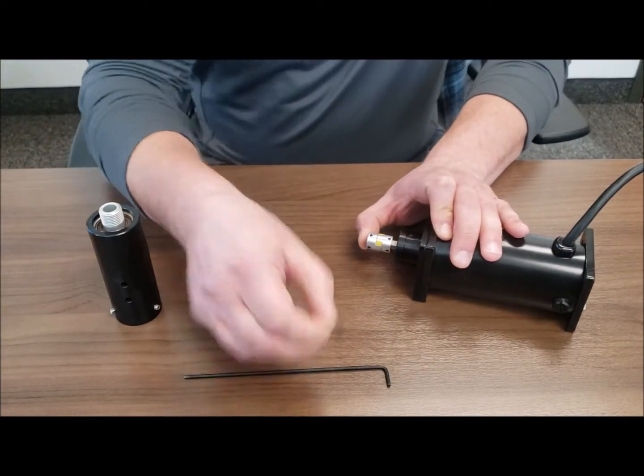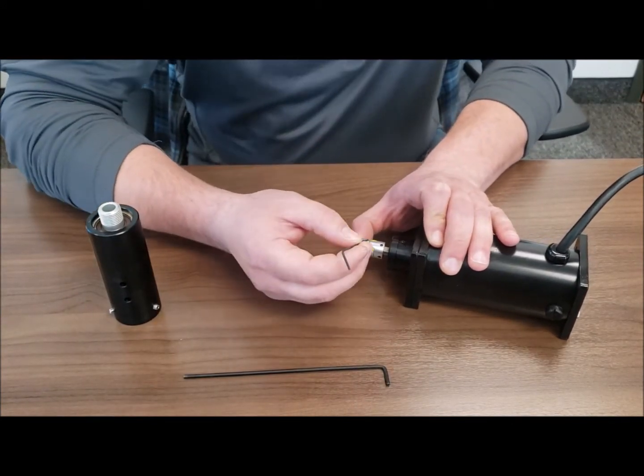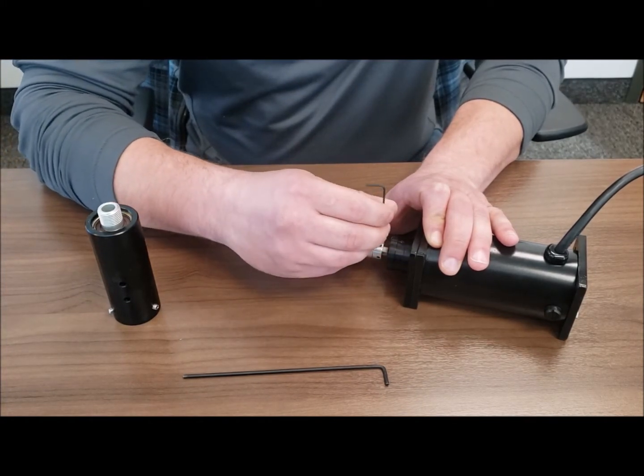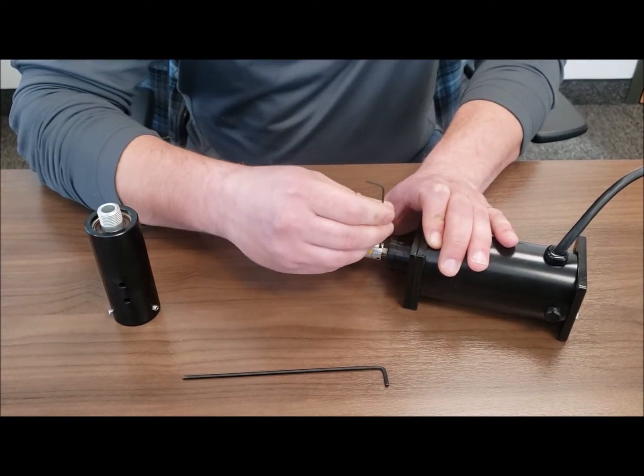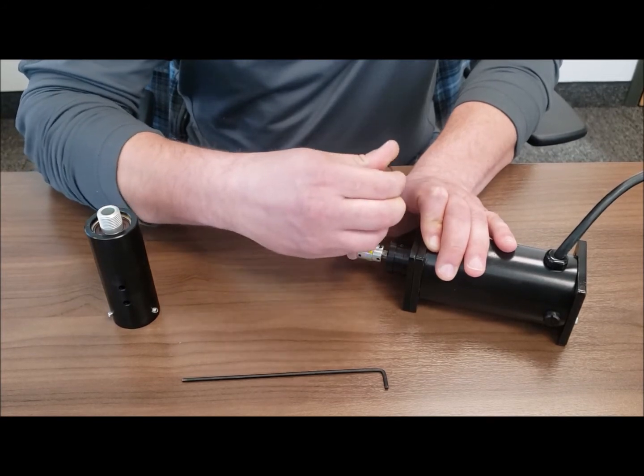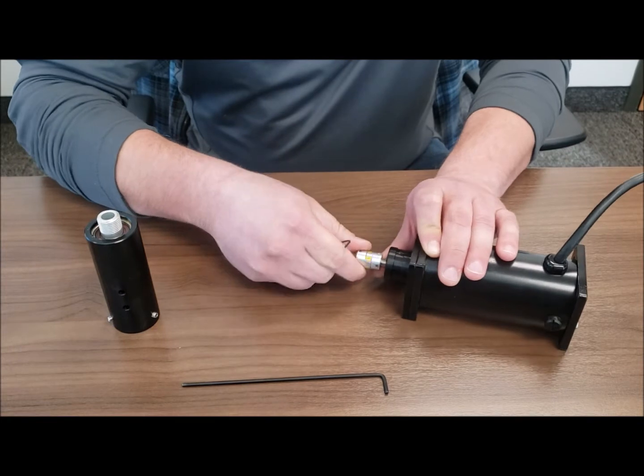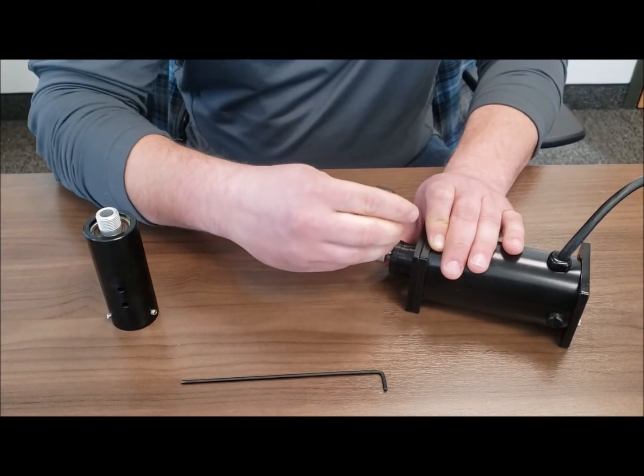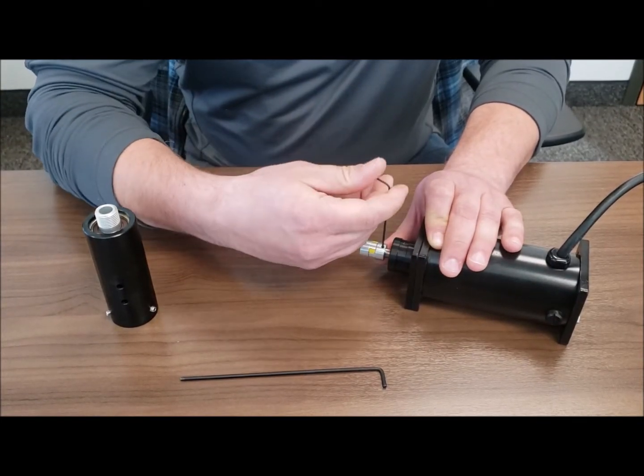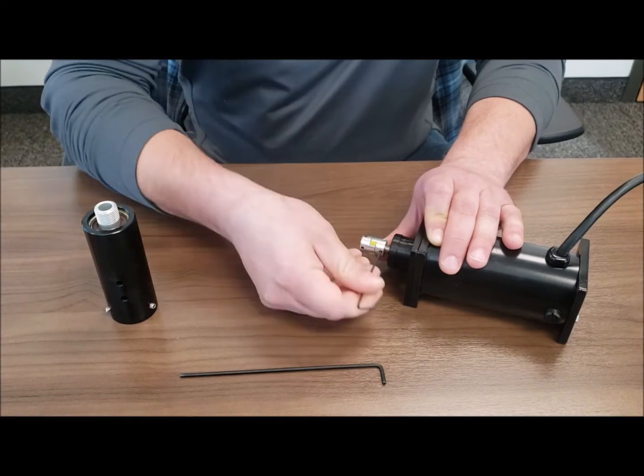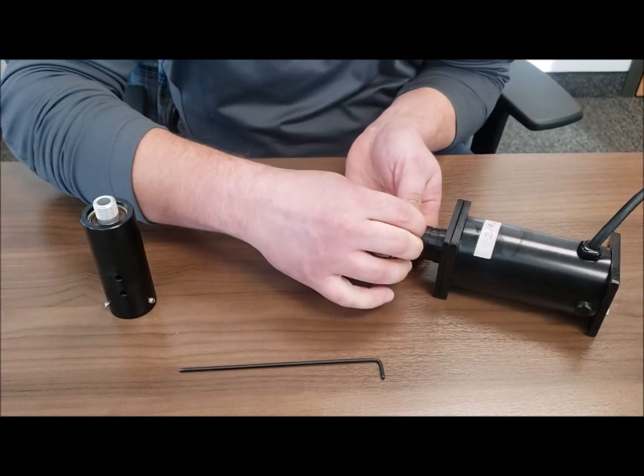Take the 1.5 millimeter allen wrench and tighten it down on the flat spot on the motor, slightly wiggling back and forth to make sure you're seating flush. Then tighten down the other screw 90 degrees away from it and come back and tighten it up.